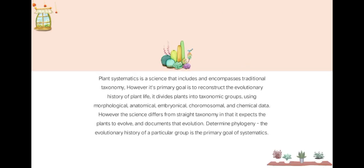Plant Systematics is a science that encompasses traditional taxonomy. However, its primary goal is to reconstruct the evolutionary history of plant life. It divides plants into taxonomic groups using morphological, anatomical, embryological, chromosomal, and chemical data. The science differs from straight taxonomy in that it expects plants to evolve and documents that evolution. Determining phylogeny — the evolutionary history of a particular group — is the primary goal of systematics.